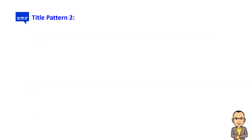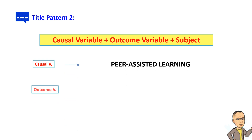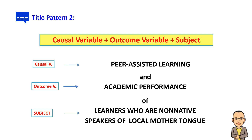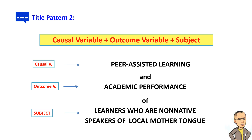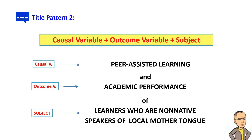In addition to the first pattern, a second pattern can be adopted: causal variable + outcome variable + subject. As an example, the causal variable is 'peer-assisted learning,' the outcome variable is 'academic performance,' and the subject is 'learners who are non-native speakers of the local mother tongue.' The resulting title is: 'Peer-Assisted Learning and Academic Performance Among Non-Native Speakers of the Local Mother Tongue.' This structured approach serves as the basis for crafting the main problem of the study, guiding researchers in defining the elements and objectives of their research.